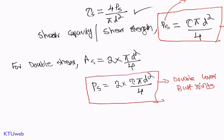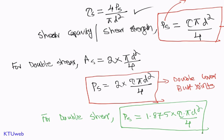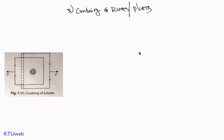Theoretically, double shear capacity is two times that of single shear. However, as per the Indian Boiler Regulation (IBR) Act, for double shear ps is taken as 1.875 times that of single shear — that is, 1.875 × τs × πd²/4. Different countries have different regulations; for Indian boilers, this standard value of 1.875 is used instead of the theoretical factor of 2.